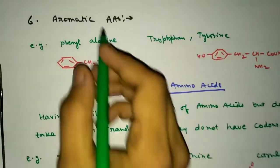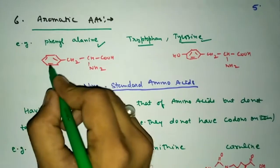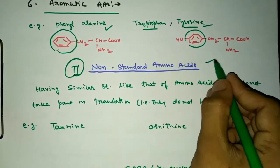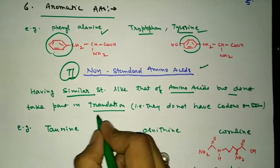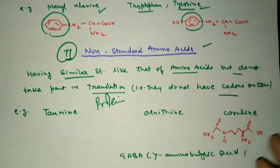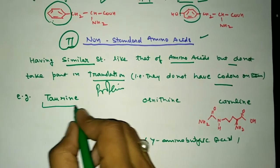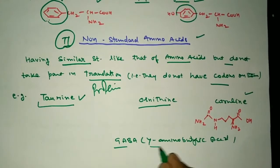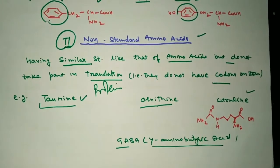Next we have the aromatic amino acids containing a benzene ring in their structure: phenylalanine, tryptophan, and tyrosine. The second type in chemical classification is the non-standard amino acids. These have a similar structure to amino acids but do not take part in translation, that is, protein synthesis. As they do not carry a codon — and codon-anticodon interaction helps in linkage of amino acids and formation of the peptide bond — the lack of a codon means they cannot take part in protein synthesis. These are taurine, ornithine, citrulline, and GABA (gamma-aminobutyric acid), also called non-proteinaceous amino acids.